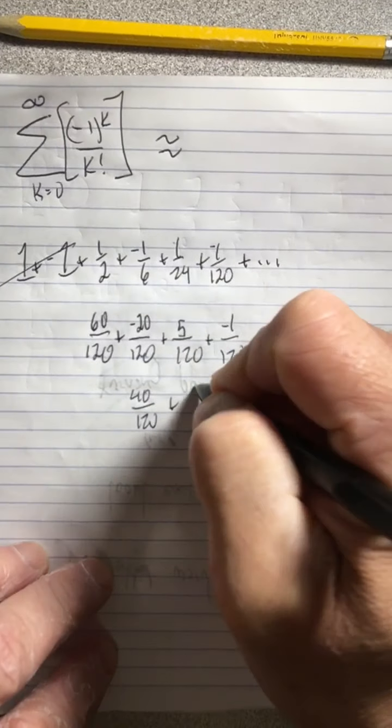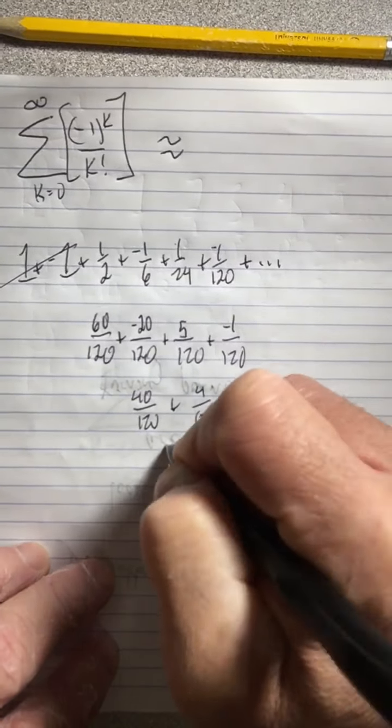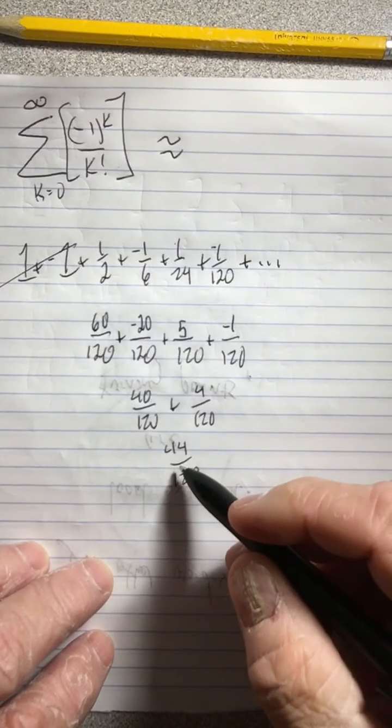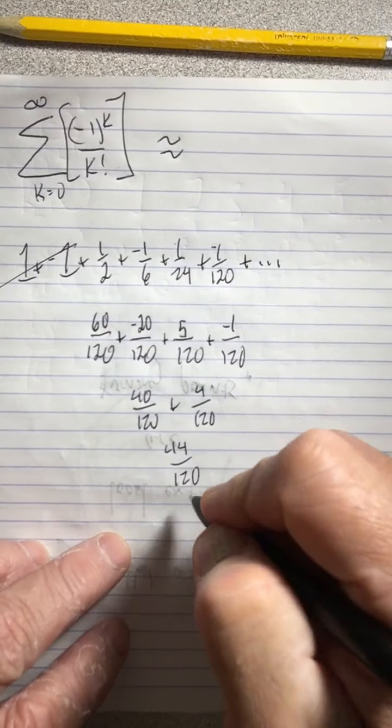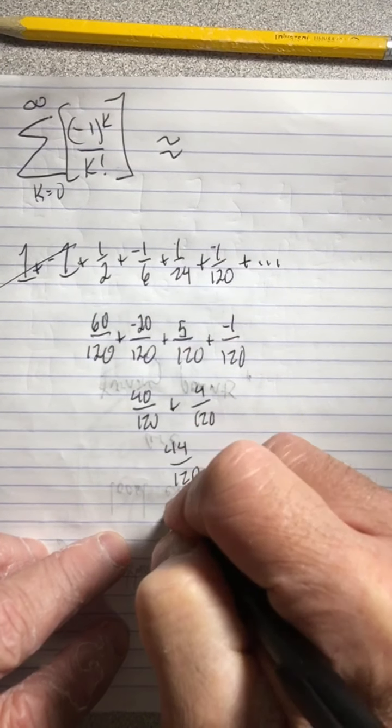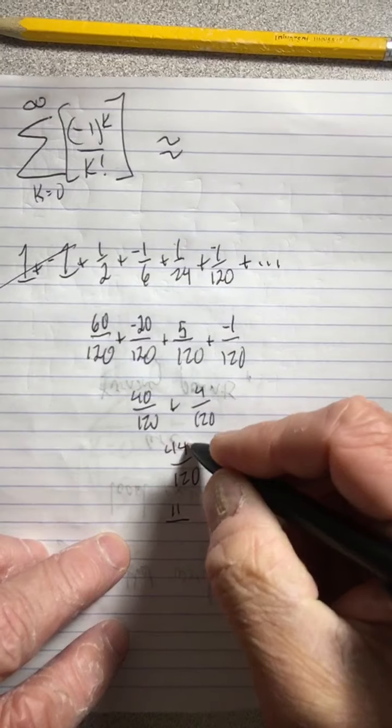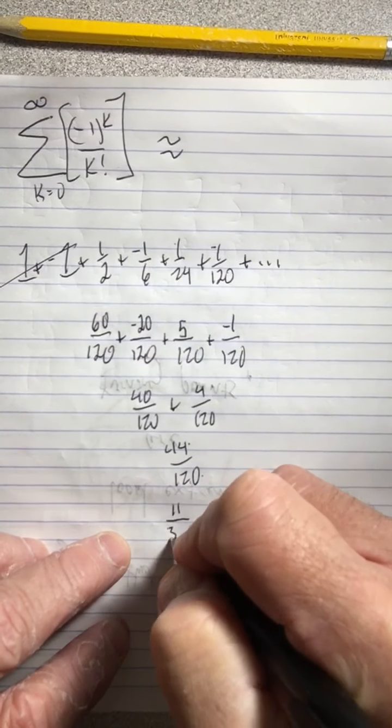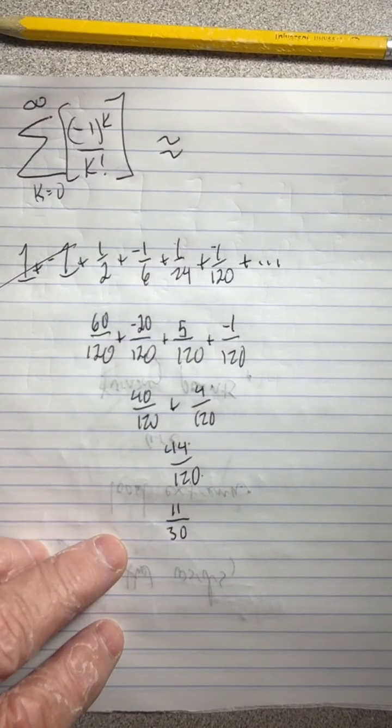Meanwhile, over here, 5 and negative 1 is 4, so I get 44 over 120. Obviously, 4 will go into 44, so I can divide by 4 and get 11. But if I divide this by 4, I must divide that by 4. 4 goes into 12 three times, so we get 11/30.